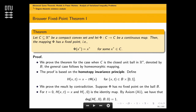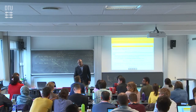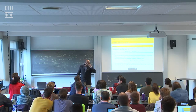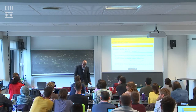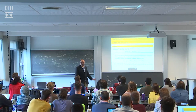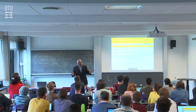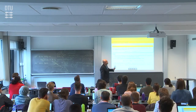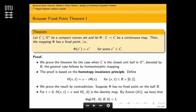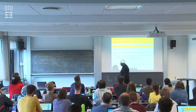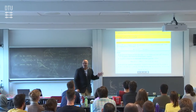Brouwer's theorem works when the map sends C to C. But for VI's, F maps from X to R-n — not necessarily to X. So you can't directly apply Brouwer; you have to do more work. I'll prove this for the case where C is a unit ball, then use the notion of a homeomorphism to handle general sets.